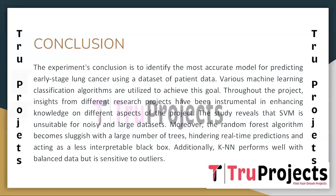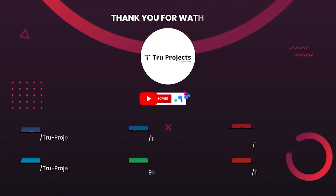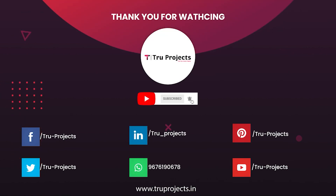In conclusion, to identify the most accurate model for predicting early stage lung cancer, various machine learning classifiers were utilized throughout the project. The study revealed that SVM is unsuitable for noisy and large datasets. Moreover, the Random Forest algorithm becomes sluggish with a large number of trees, hindering real-time prediction and acting as a less interpretable black box. Additionally, KNN performs well with balanced data but is sensitive to outliers.